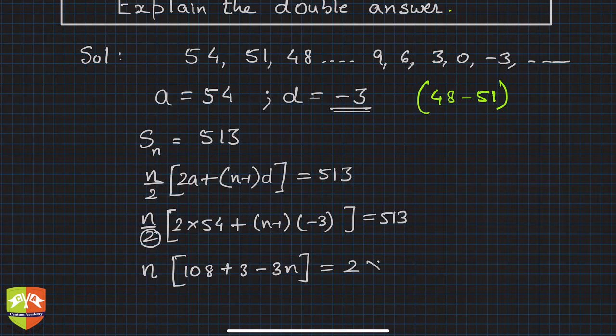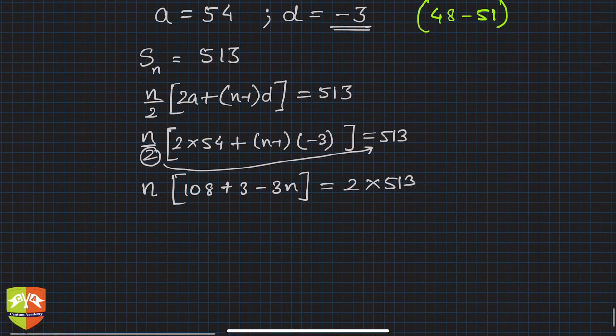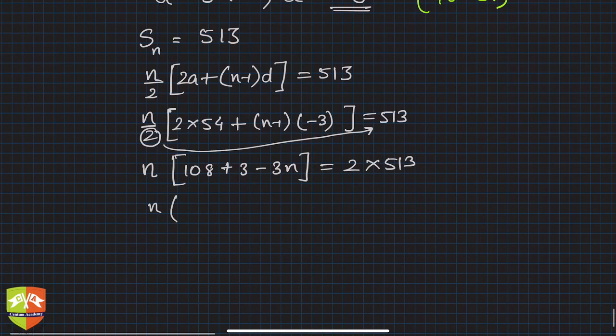This equals twice 513, so the 2 comes here and multiplies. This is n(111 - 3n) = 1026.